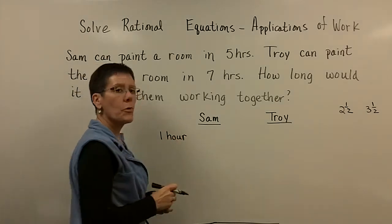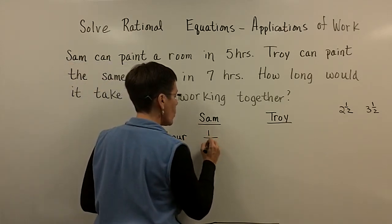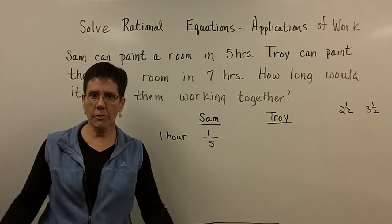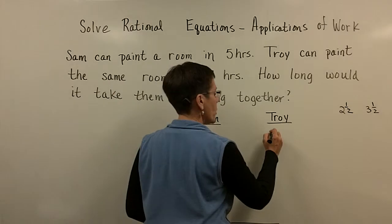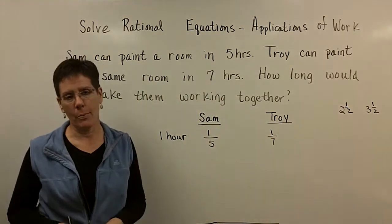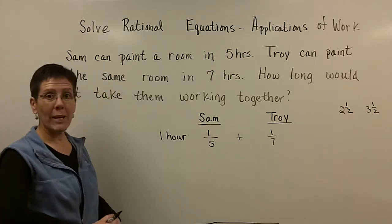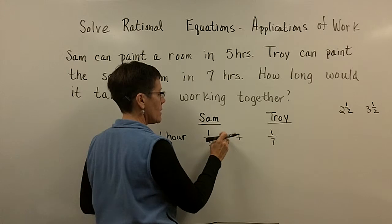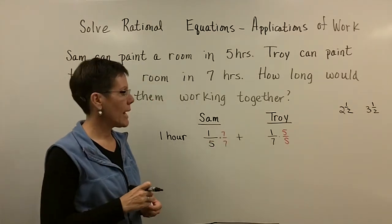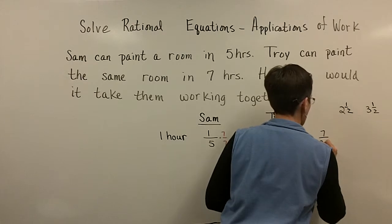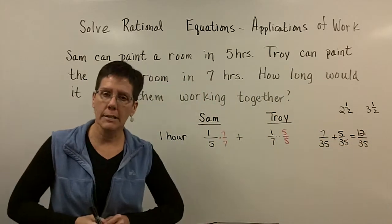If Sam and Troy worked for one hour, so Sam can paint a room in five hours. If he worked for one hour, wouldn't he get one-fifth of the work done? One-fifth of the room painted if he worked for one hour, because he can do the whole room in five hours. And Troy works for one hour, and wouldn't Troy get one-seventh of the project done? But they're going to work together, not by themselves. And so, if we added their work that they accomplished together, then we have to get common denominators. And so, they would get seven-thirty-fifths and five-thirty-fifths, let's write that over here, seven-thirty-fifths and five-thirty-fifths, or they'd get twelve-thirty-fifths of the work done. Twelve-thirty-fifths.